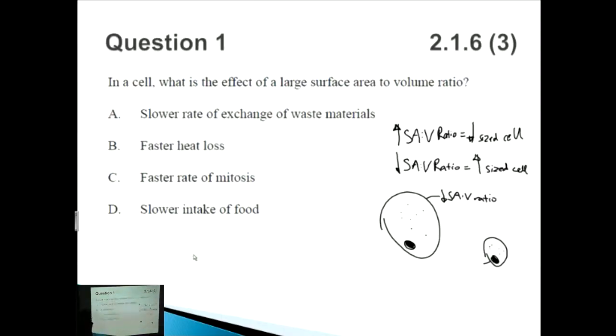Coming back to the question: what is the effect of a large surface area to volume ratio? If this is a small sized cell, what this means is that there's a lot of surface area for things to be either absorbed or things to be lost. It's very easy for things to go in and very easy for things to go out.